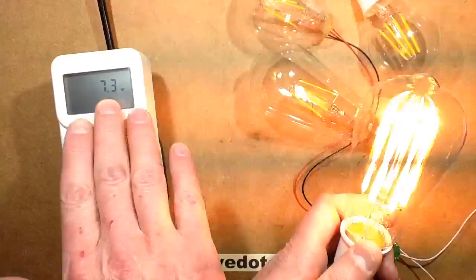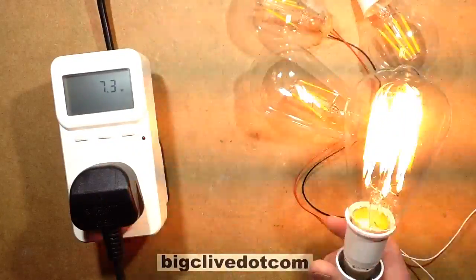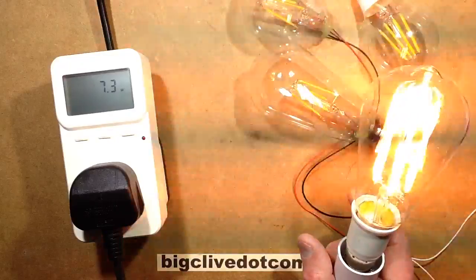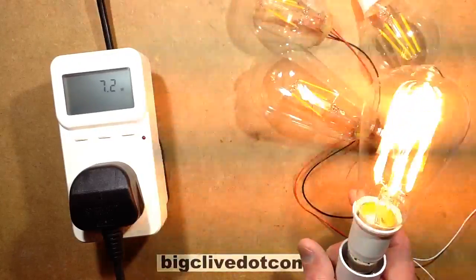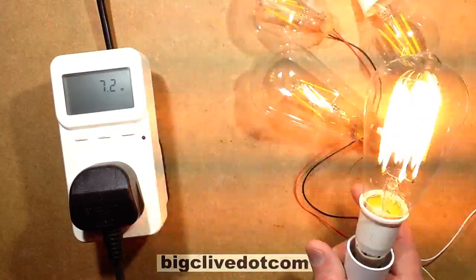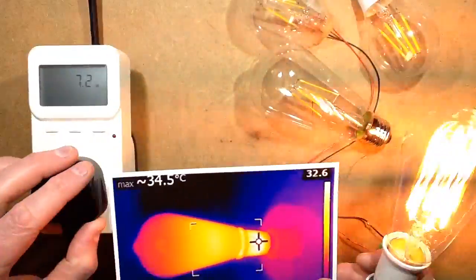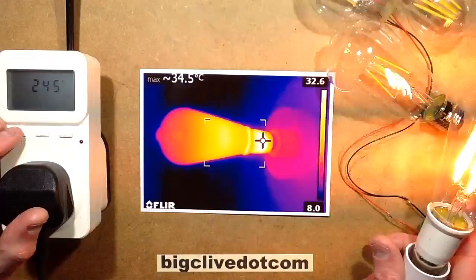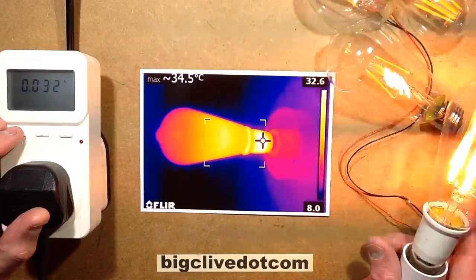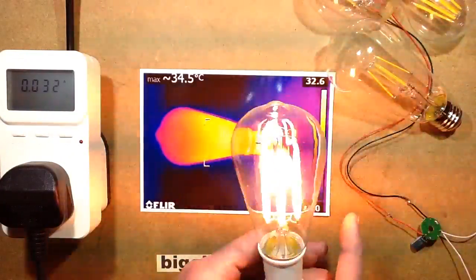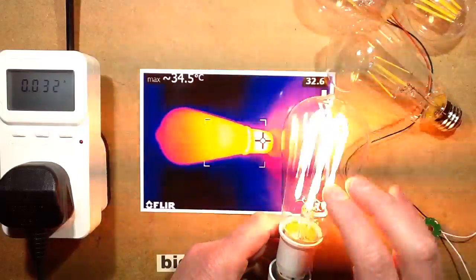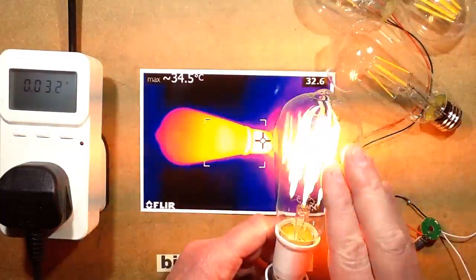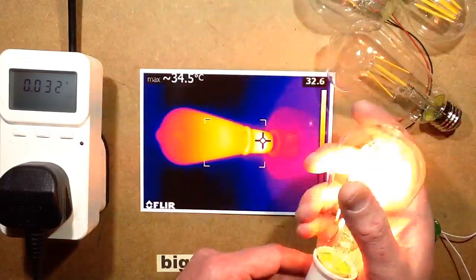The power starts about 7.3 watts, then after it's warmed up it starts creeping down. The current incidentally is approximately 32 milliamps, and if you consider that the configuration they've got here is three filaments in parallel up and then three filaments in parallel down, that means it's roughly 10 milliamps per filament, which does account for the lower intensity.